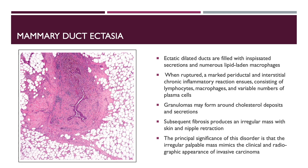The ectatic dilated ducts are filled with inspissated secretions and numerous lipid-laden macrophages. When ruptured, a marked perioductal and interstitial chronic inflammatory reaction ensues consisting of lymphocytes, macrophages, and variable numbers of plasma cells. Granulomas may form around cholesterol deposits and secretion. Subsequent fibrosis produces an irregular mass with skin and nipple retraction. The principal significance of this disorder is that the irregular palpable mass mimics the clinical and radiographic appearance of invasive carcinoma.